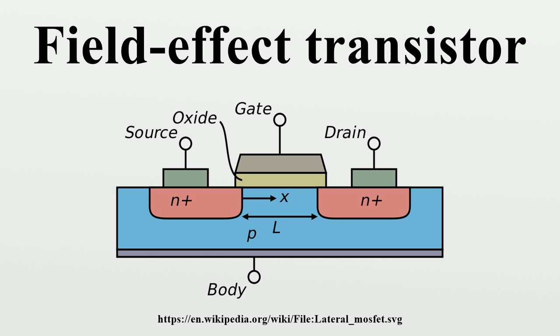Further gate to source voltage increase will attract even more electrons towards the gate which are able to create a conductive channel from source to drain. This process is called inversion.